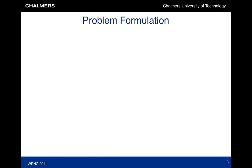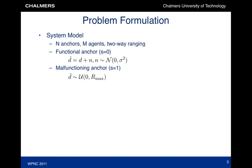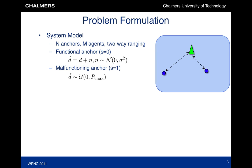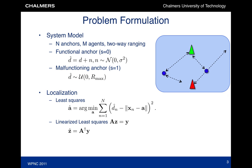Let us first describe the system model. We have a network comprising anchors and agents. Anchors can be either functional, in which case they generate reliable distance estimates, or malfunctioning, in which case the distance estimates are uniform within a certain set. Given at least three distance estimates, an agent can determine its position using standard algorithms.